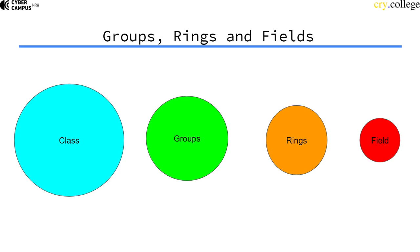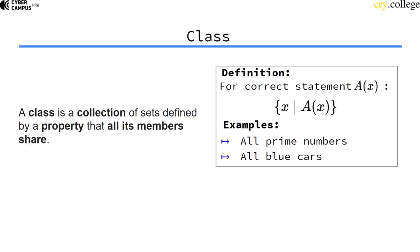The most basic form of construct, I would say, is a class. A class is just a collection, a set of elements that is defined by a property that all of its members share. An example would be all prime numbers, or all blue cars, all students of the fifth grade. So a very basic principle that you should be familiar with.